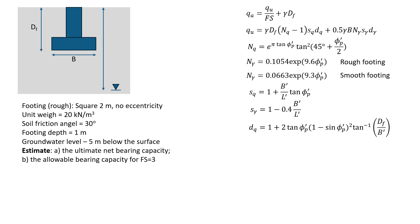When we have a soil mass, and this will be sand, so there is no cohesion. We know that the friction angle of that soil is 30 degrees, and we're going to estimate the ultimate net bearing capacity of this footing. The footing is a square footing, it has two meters size, there is no eccentricity, and the footing is rough.